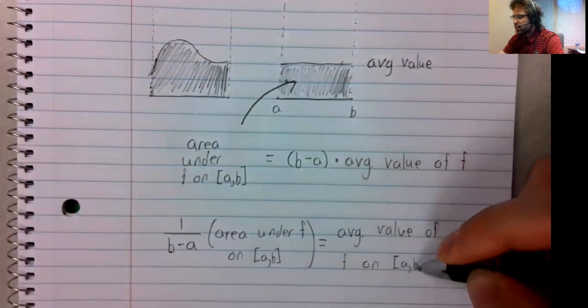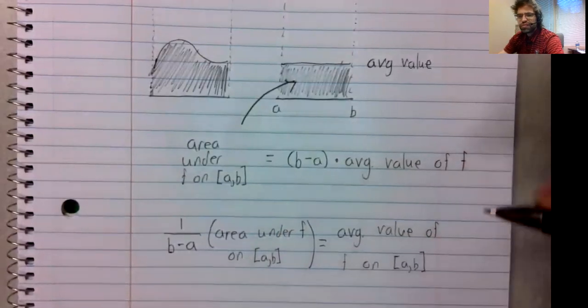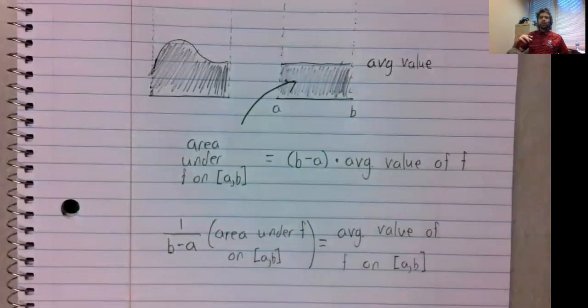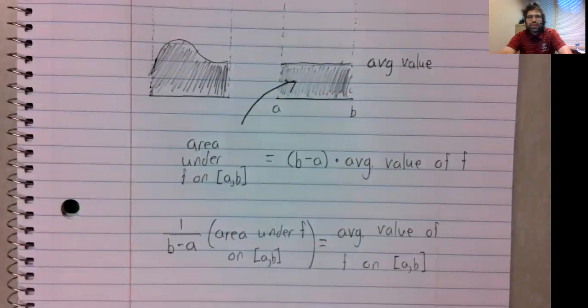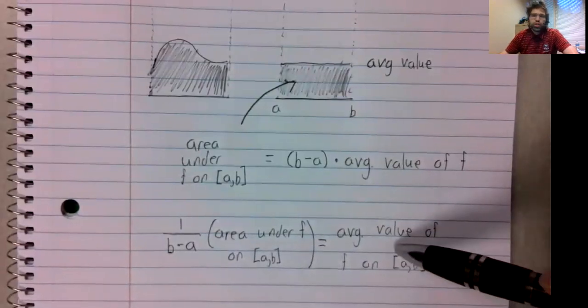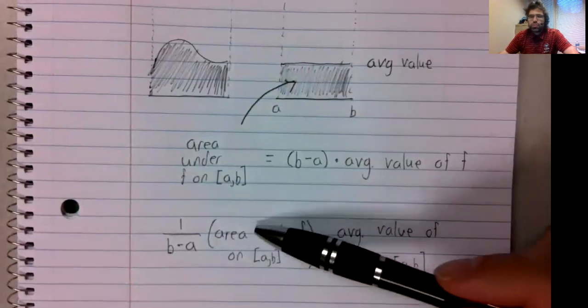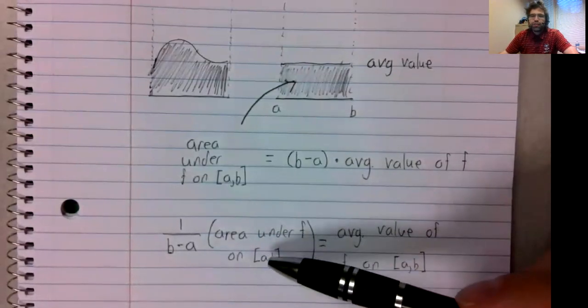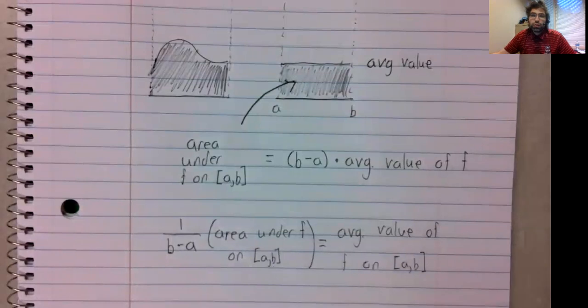On the interval from A to B. Of course, we're pretty limited in what we can do with this at the moment. We've defined the average value of a function, but we don't know how to find the area under a curve.